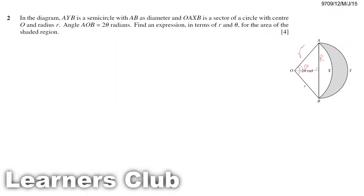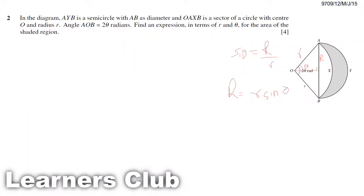This R is the radius of the sector. To find the radius of the semicircle, we use sine: sin theta equals opposite over hypotenuse. So the radius of the semicircle is R sin theta.